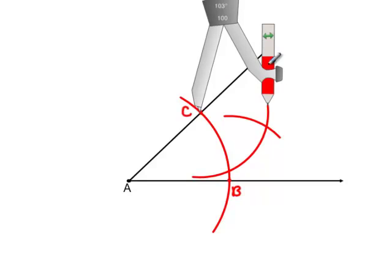The intersection of those two arcs will be a point on the angle bisector, so let's label that point D.